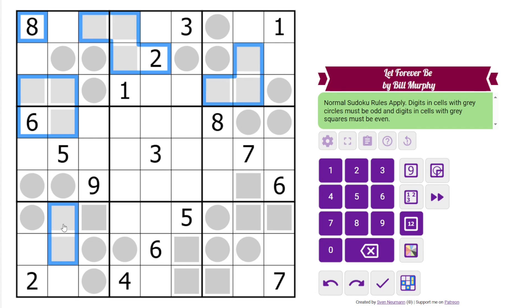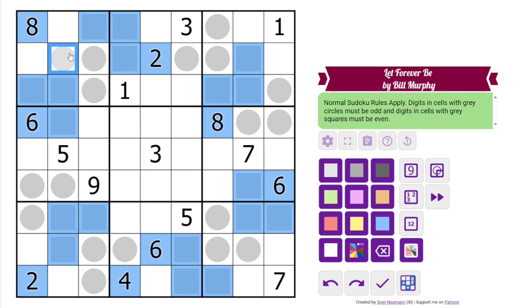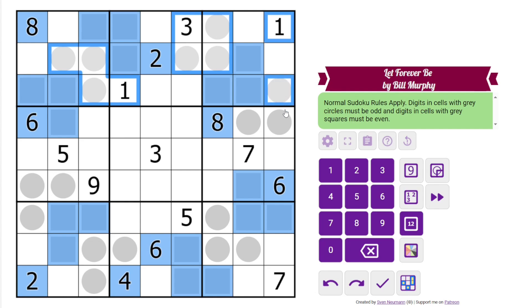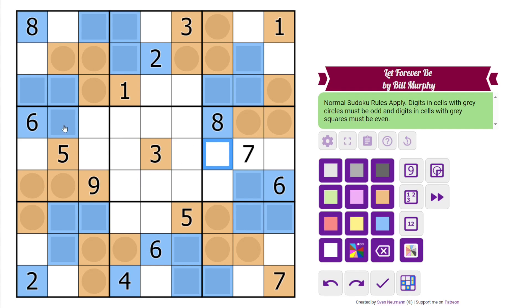So I'm going to color all of the gray squares and even digits first. And the 8. We will color them blue. And then all of the odd digits and circles. And they will be orange.